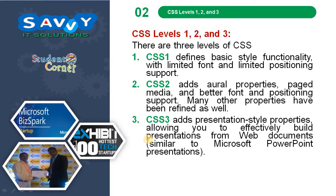Now, CSS Level 1, 2, and 3. There are three levels of CSS. CSS Level 1 defines basic style functionality with limited font and limited positioning support. CSS Level 2 adds aural properties, paged media, and better font and positioning support, along with many other properties. CSS Level 3 adds presentation style properties, allowing you to effectively build presentations from web documents, similar to Microsoft PowerPoint.